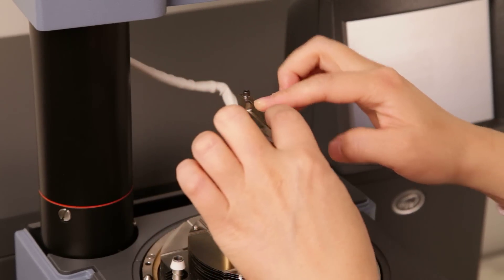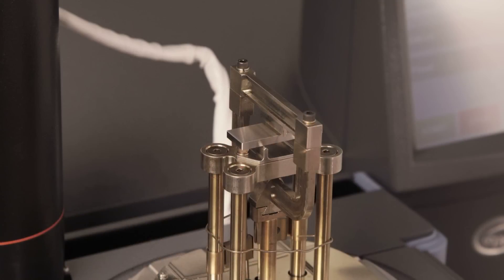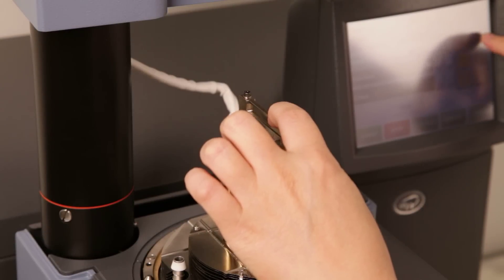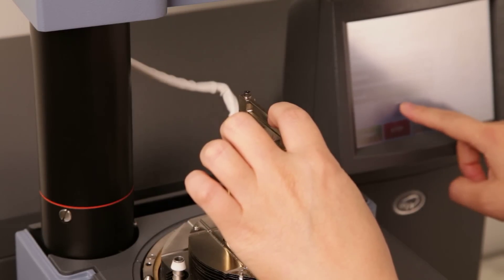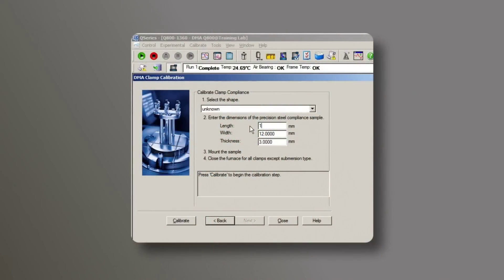Make sure the movable clamp is in touch with the bar, then lock the drive shaft from the touch screen. From the control software, enter the dimension of the steel bar. Please remember, the length is the length of the clamp, then click on calibrate.